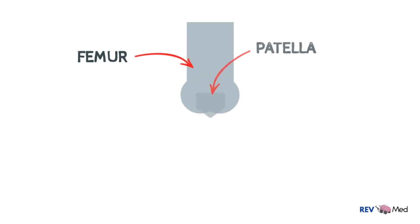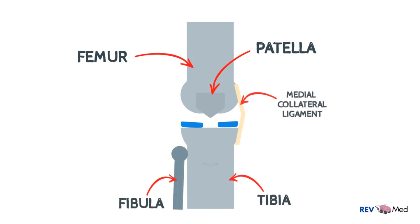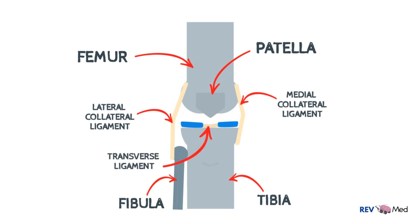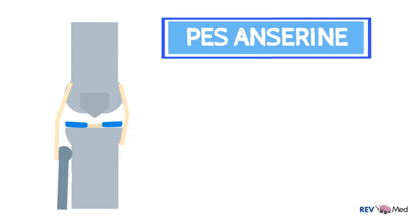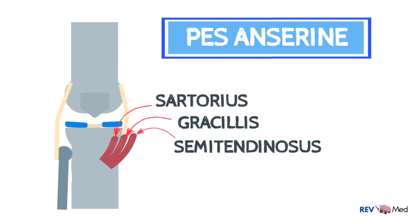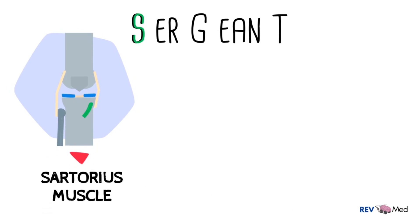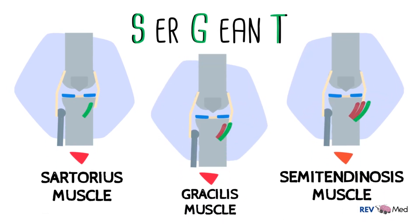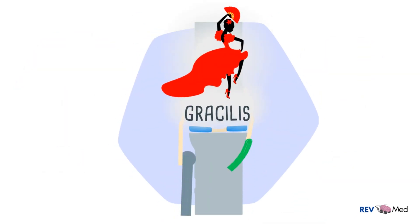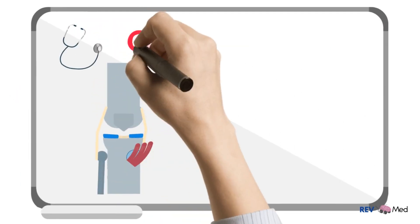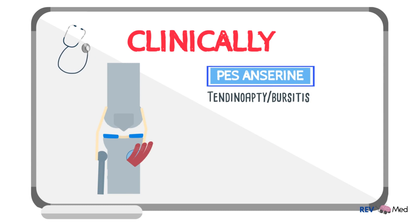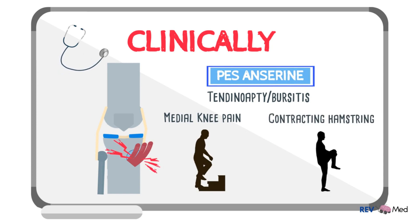We'll draw the femur, patella, tibia, and fibula again and illustrate the medial and lateral collateral ligaments and the transverse ligament. At the anteromedial part of the tibia is an important structure called the pes anserine — three tendons of muscles: semitendinosus, gracilis, and sartorius. Behind these tendons is the pes anserine bursa. Remember them with the mnemonic SERGEANT: S for sartorius, G for gracilis, and T for semitendinosus — or picture a graceful lady between two sergeants. Clinically, pes anserine tendinopathy or bursitis causes medial knee pain felt when climbing stairs and when contracting the hamstring against resistance.